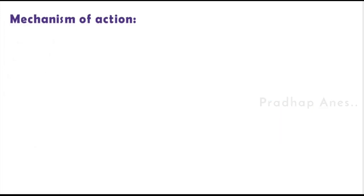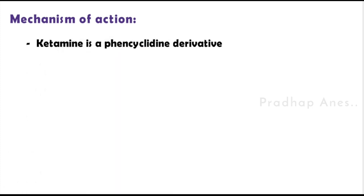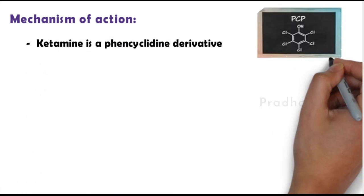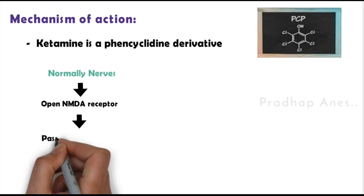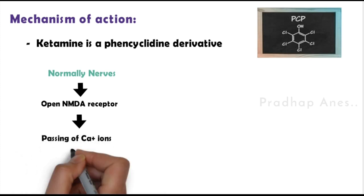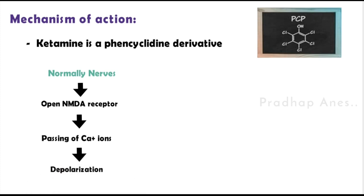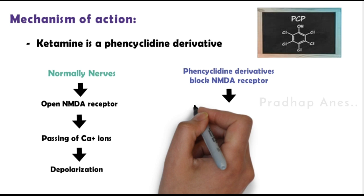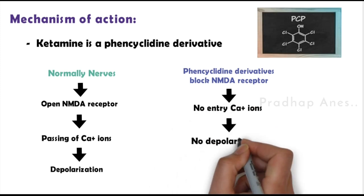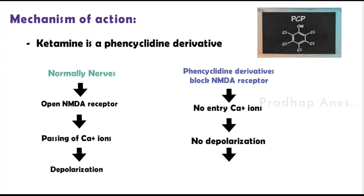Mechanism of action: Ketamine is a phencyclidine derivative. Normally, nerves open the NMDA receptor and allow the passing of calcium ions, causing depolarization, which sends pain stimuli to the brain stem. Phencyclidine derivatives like ketamine block this NMDA receptor, so there is no entry of calcium ions, no depolarization, and no stimulation of the nerve. This is how ketamine acts.